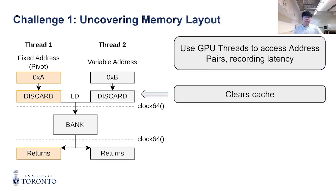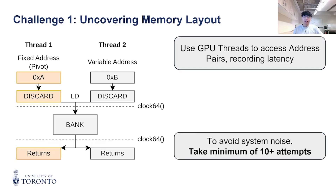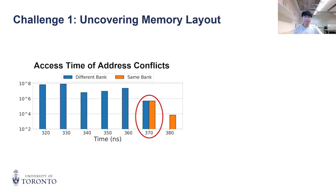Then the threads will only proceed when both accesses have completed, thus giving us only the slowest of the two latencies. We take the minimum of 10 measurements, avoiding spikes from system noise.